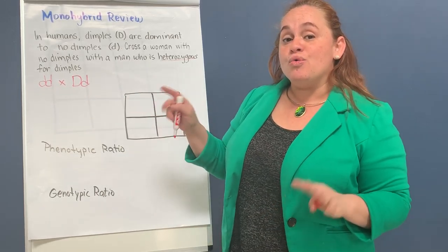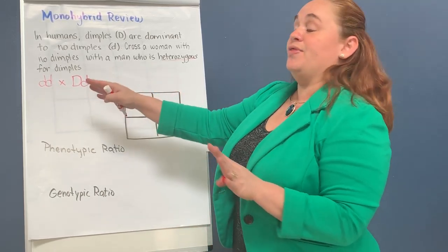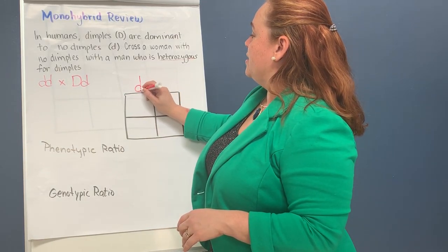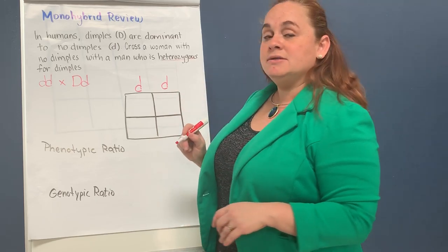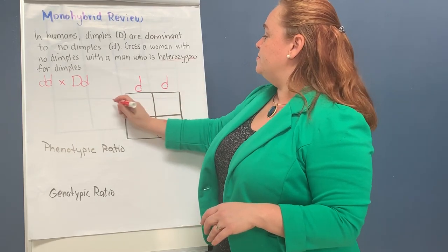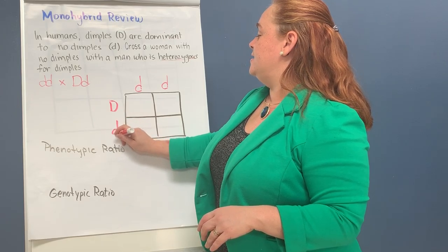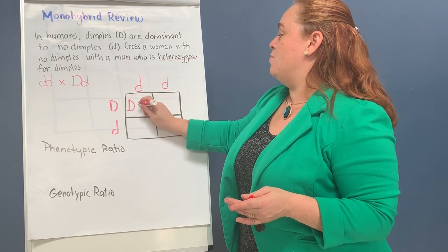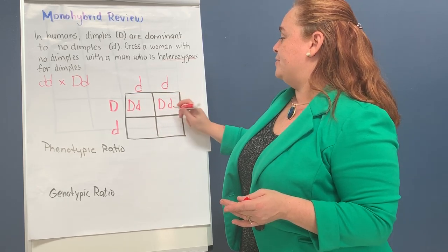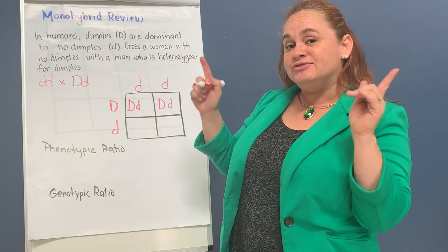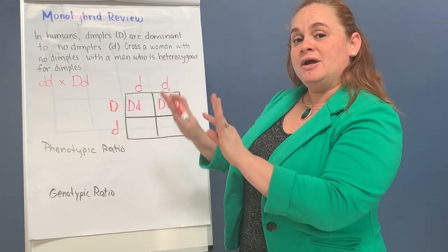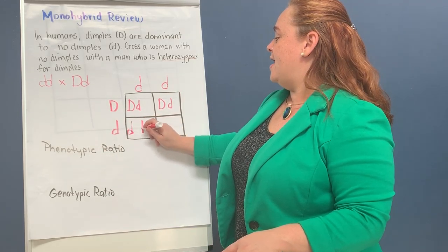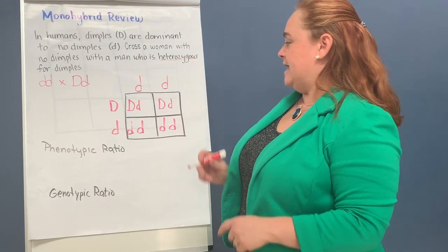Now that I know what the cross is going to look like, I'm going to set it up. I will put one parent on the top of the columns and one on the side for the rows. Then we do what you know — we cross multiply. Always put the capital letter first; that way it gives you a clearer visual and an easier way to identify. And then we do the cross multiply for the second one too.